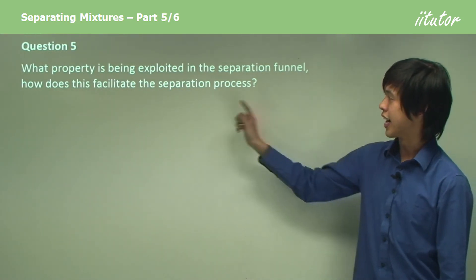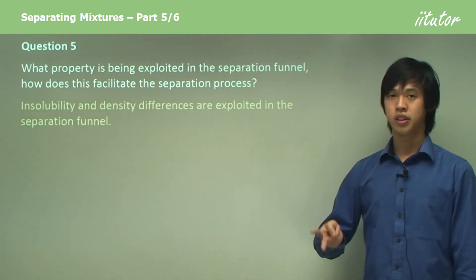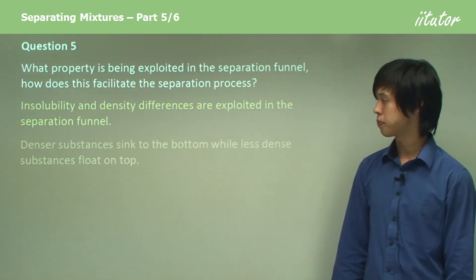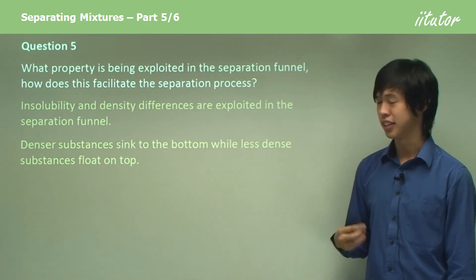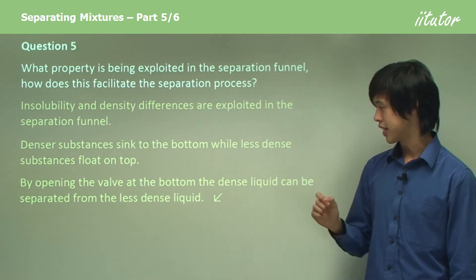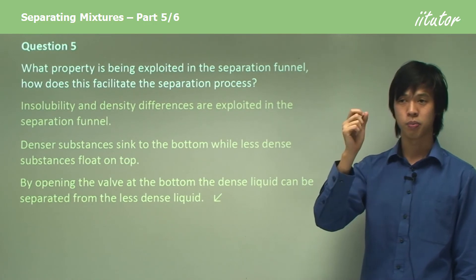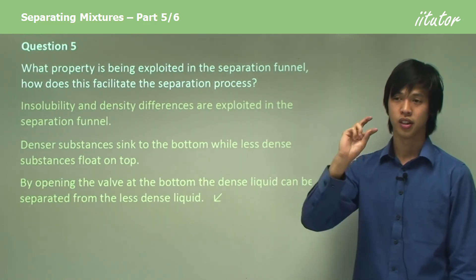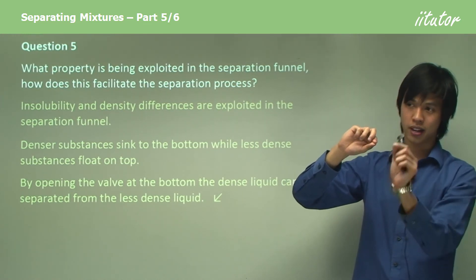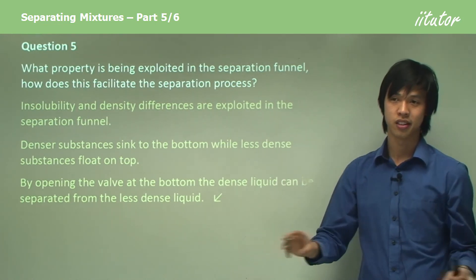What property is exploited in the separating funnel? The two key things are insolubility and density differences. Denser substances sink to the bottom while less dense substances float on top. By opening the valve at the bottom, the dense liquid can be separated from the less dense liquid. You open the valve to let the dense liquid out, and when the less dense liquid is about to flow through, you close the valve - and then you've separated the two liquids.